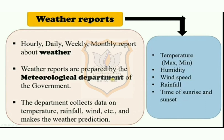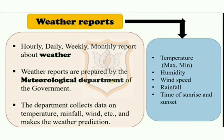We find that there are hourly, daily, weekly, and monthly reports about weather. The weather report carries information about the temperature, humidity — which is a measure of the moisture in air — wind speed, rainfall, and time of sunrise and sunset. You must be thinking about who prepares these reports. Weather reports are prepared by the meteorological department of the government.